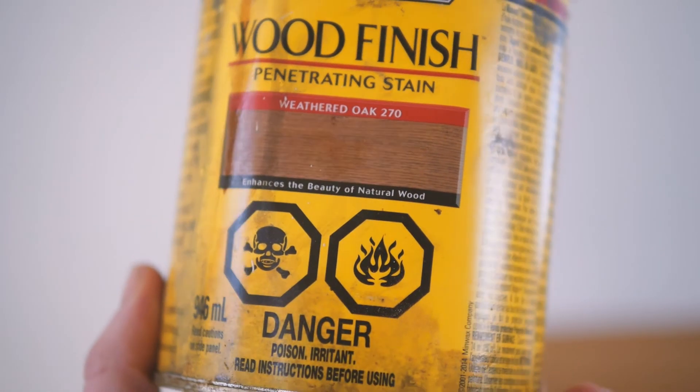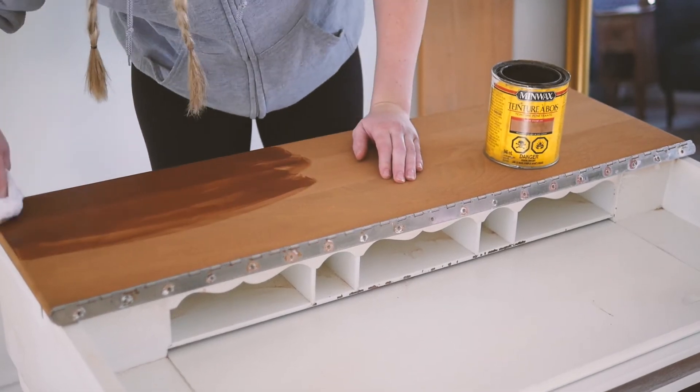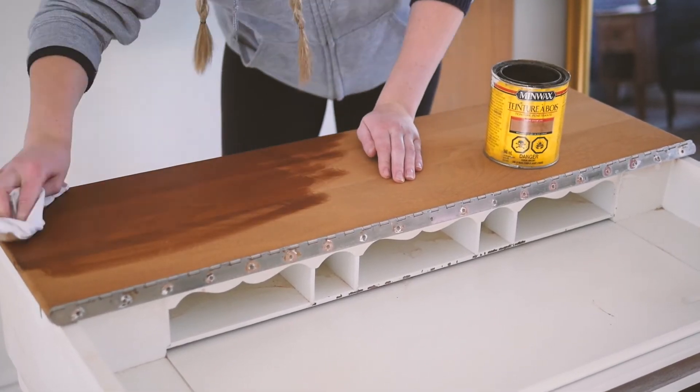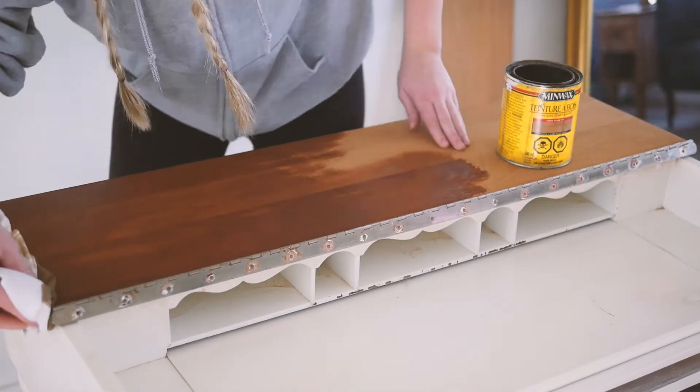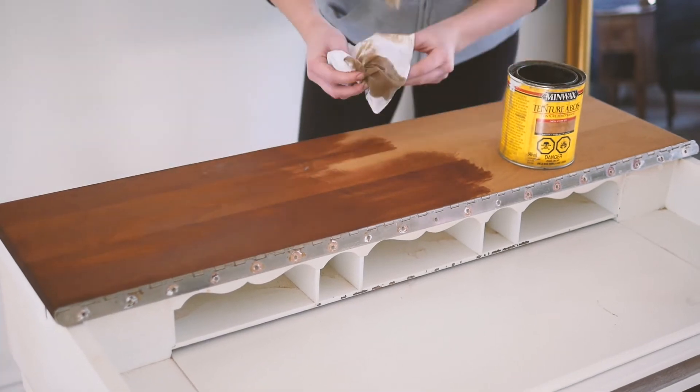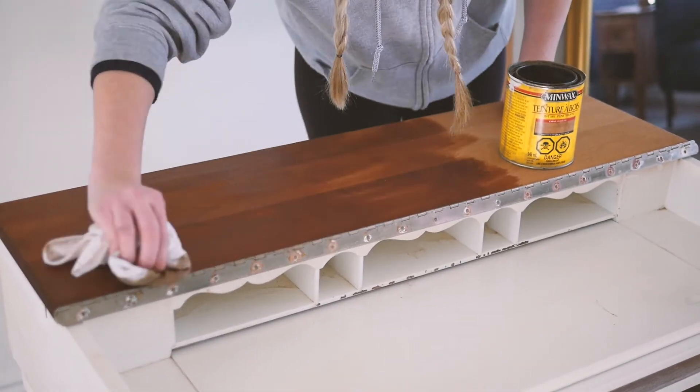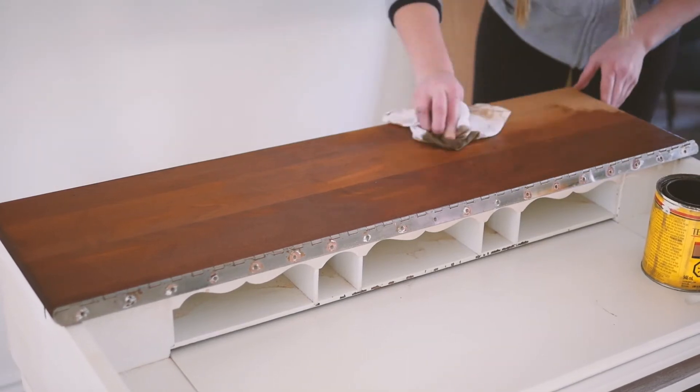I didn't want it to come out super red, so I decided to use a stain, the Weathered Oak by Minwax. It's kind of a grayish brown stain, so I was hoping it would counteract the red a little bit. I'm using a clean rag to apply the stain, and once it's all covered I'm going to rub away all the excess.